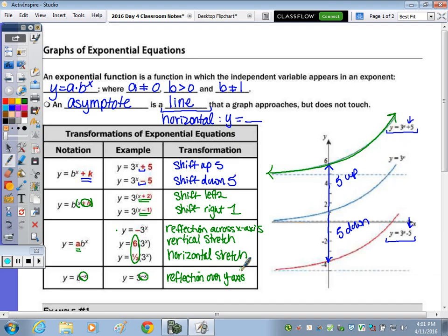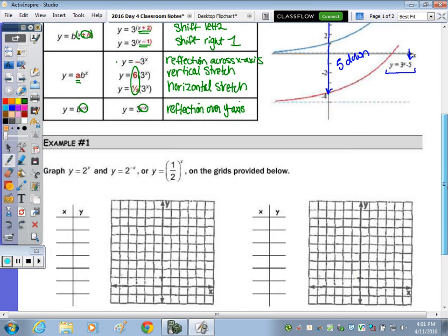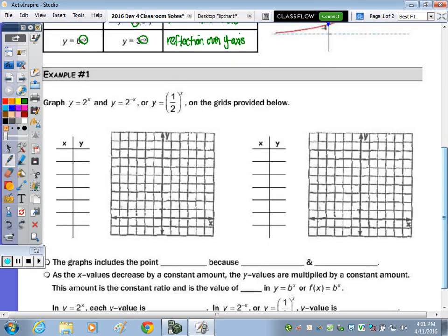So we're actually going to see some of these transformations below in example number one, for y equals 2 to the x. Instead of a base 3, we're going to look at a base 2, and then y equals 2 to the negative x, or y equals one-half to the x. Now these two equations are the same because if you remember the negative exponent rule, 2 to the negative x is equal to 1 over 2 to the x, which is the same as saying one-half to the x power.